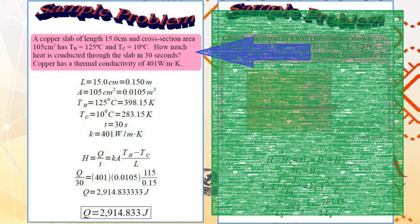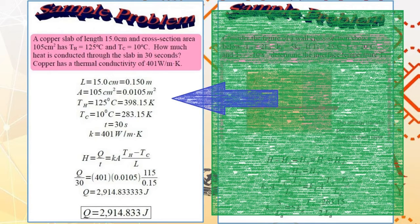Copper has a thermal conductivity of 401 watts per meter Kelvin. So, now we have the following values. Let L be the length of the copper slab, 15 centimeters. Capital A be the cross-section area of the copper slab, 105 centimeters squared. And, of course, you have TH and TC. Again, it's always a good idea to convert your temperature to Kelvin scale. Time elapsed is 30 seconds and the thermal conductivity is given by 401 watts per meter Kelvin.